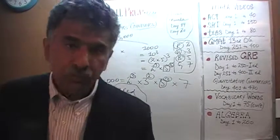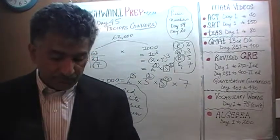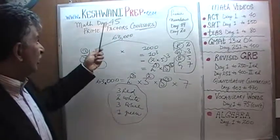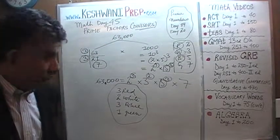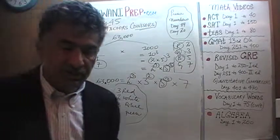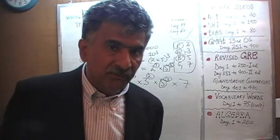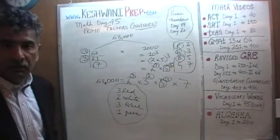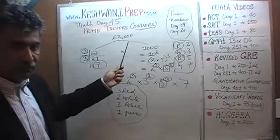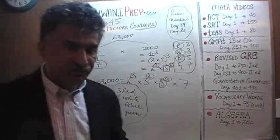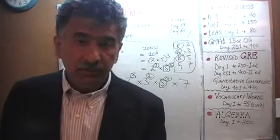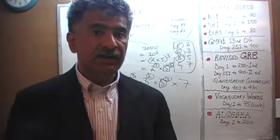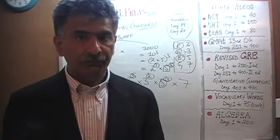Now for those of you who have been watching these videos in this series — if you watched yesterday's video, day number 44 — you will recognize this problem immediately. Yesterday we did five problems and one of the very last problems was this one. We found the prime factors of 63,000 yesterday, and today we see how something like this will appear on the exam as a word problem.